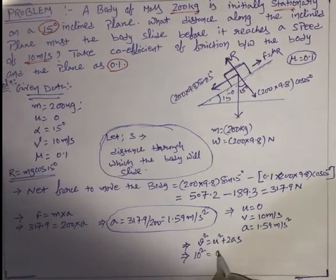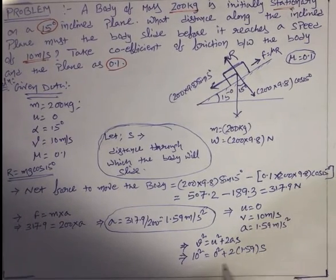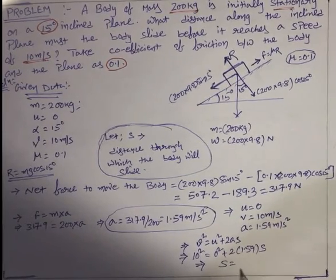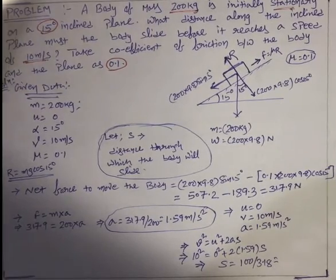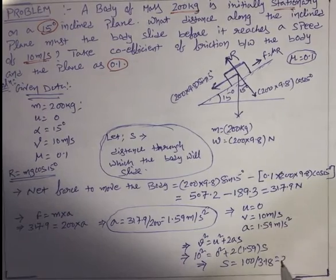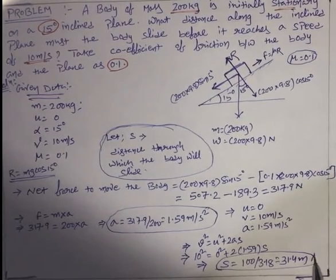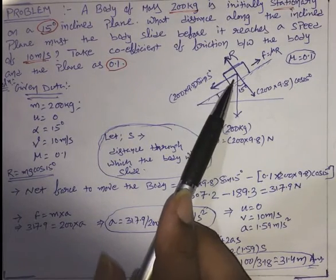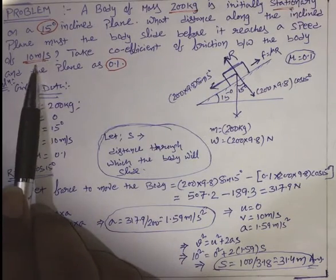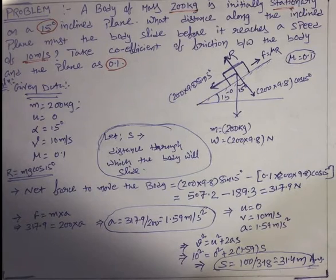Substituting into v² = u² + 2as: 10 squared equals 0 plus 2 into 1.59 into s. So 100 equals 3.18 times s, giving s equals 31.4 meters. This is the final answer — the body travels 31.4 meters along the inclined plane from its stationary position until it reaches a velocity of 10 meters per second.